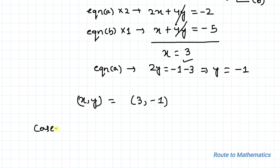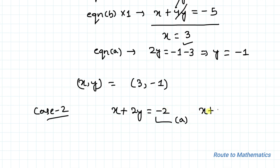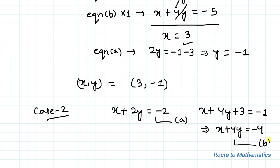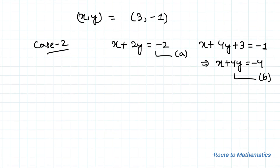Case 2: Taking the vice versa, let x + 2y = −2 (equation a) and x + 4y + 3 = −1, which implies x + 4y = −4 (equation b). Using the elimination method, multiply equation a by 2 to get 2x + 4y = −4.